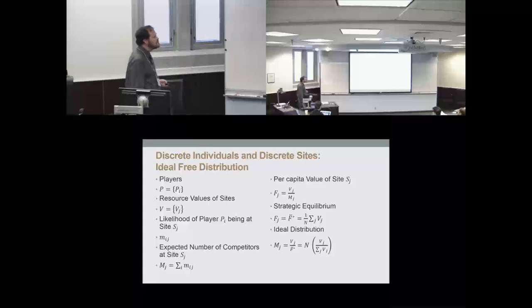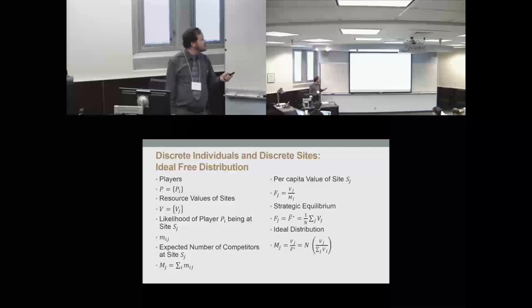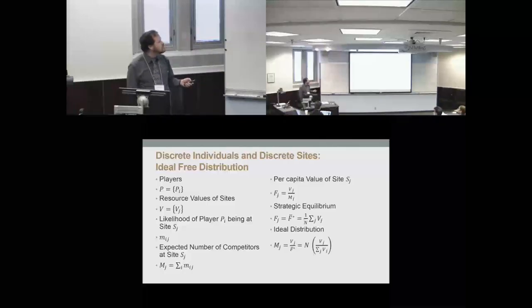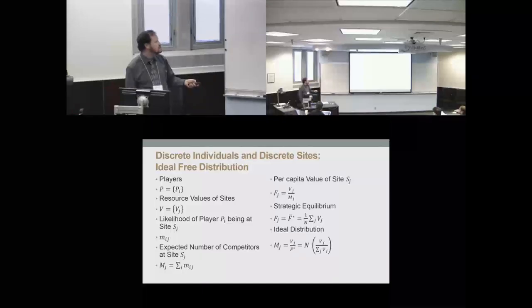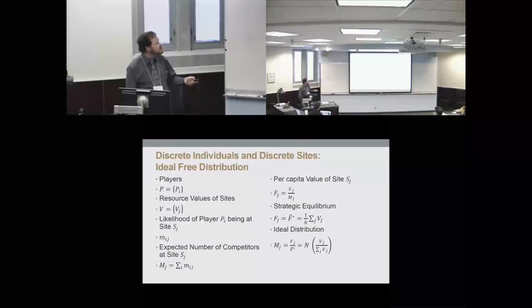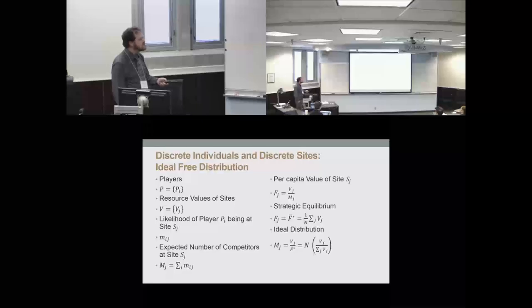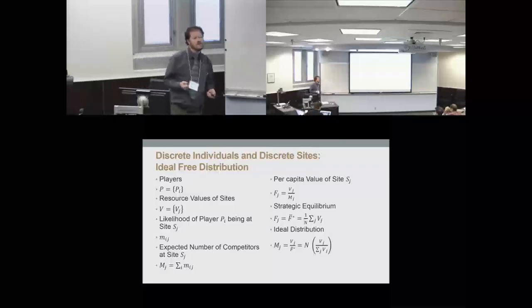From a math standpoint, we'd have our set of players (birds), a set of resource values for available sites, and a likelihood that one player would be at a particular site — almost like a transition probability. From there we calculate the total expected number of individuals at each site and compare per capita values given current competition. The strategic equilibrium — the ideal free distribution — is that the value of every site equals the average value, which is total value of the environment divided by all birds. The ideal distribution is that total expected competitors at a site are simply in proportion to that site's value relative to all available resources.